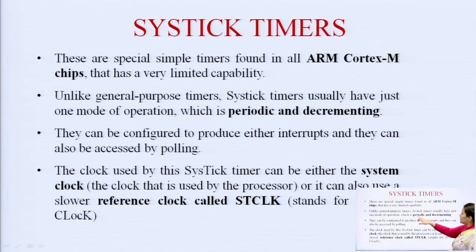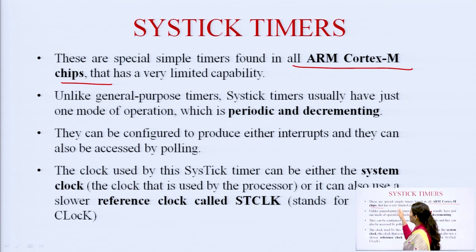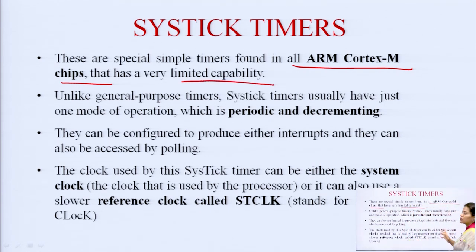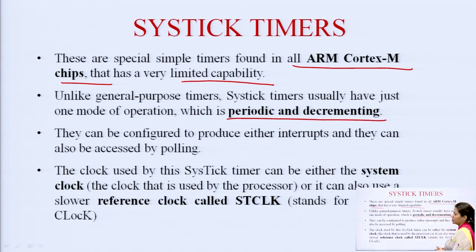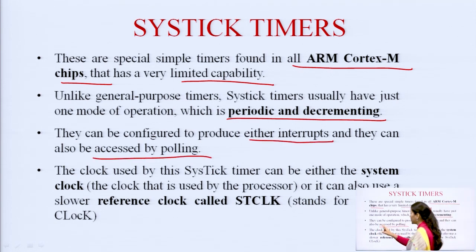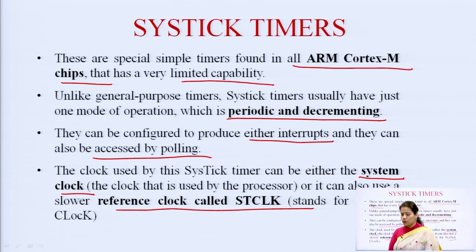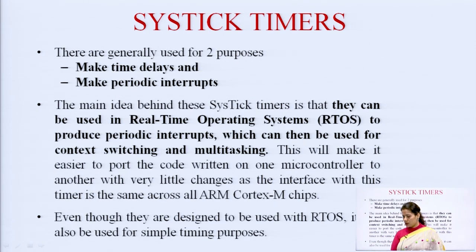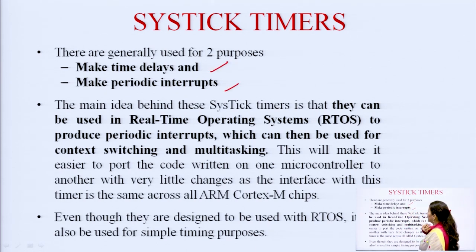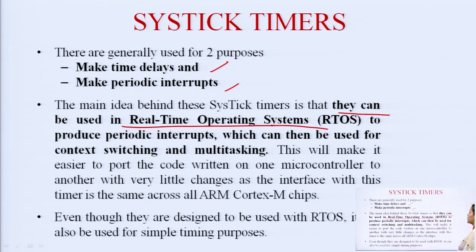The SysTick timer is mainly found in all ARM Cortex-M chips and has very limited capability. Unlike general purpose timers, SysTick timers usually have just one mode of operation: periodic and decrementing. They can be configured to produce interrupts or accessed by polling. The clock used can be either the system clock or a slower version known as the SysTick clock. SysTick timers are mainly used in real time operating systems (RTOS) for periodic interrupts, context switching, and multitasking.